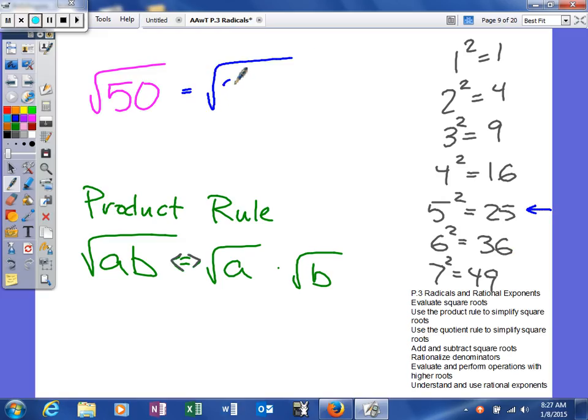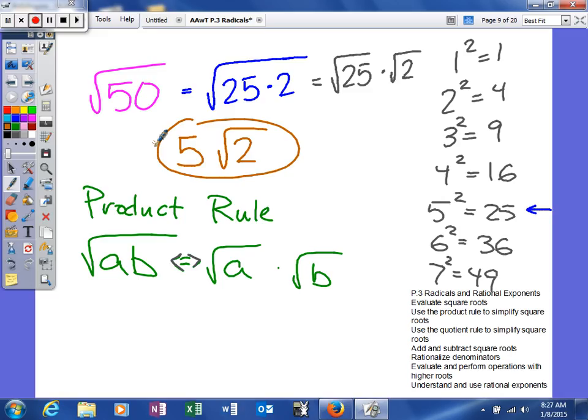So what we're going to do is we're going to say 50 is really 25 times 2. Those are the two numbers that will multiply together to give me 50. And we pick these two, not randomly, but one has to be a perfect square, and the other one is the other factor that will multiply along with 25 to give me 50. So what the product rule says is we can break this up as the square root of 25 times the square root of 2. Well, square root of 25, we can find that by just taking the square root of it. What can we multiply together to give us 25? And that will be 5. So our answer is going to be 5 times the square root of 2. That is the simplified form for that radical.